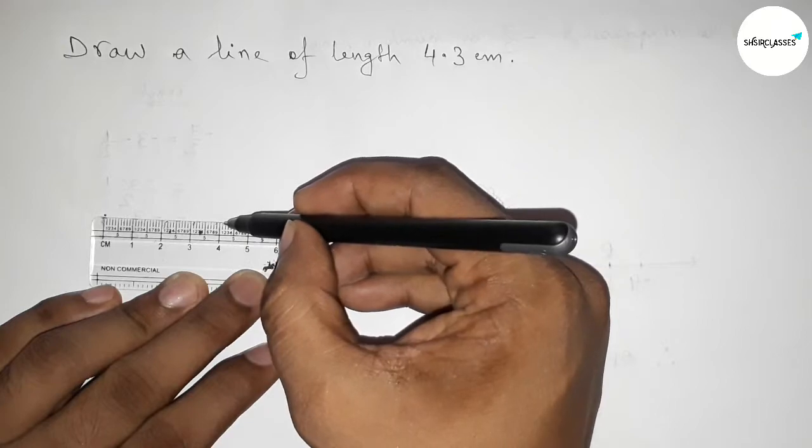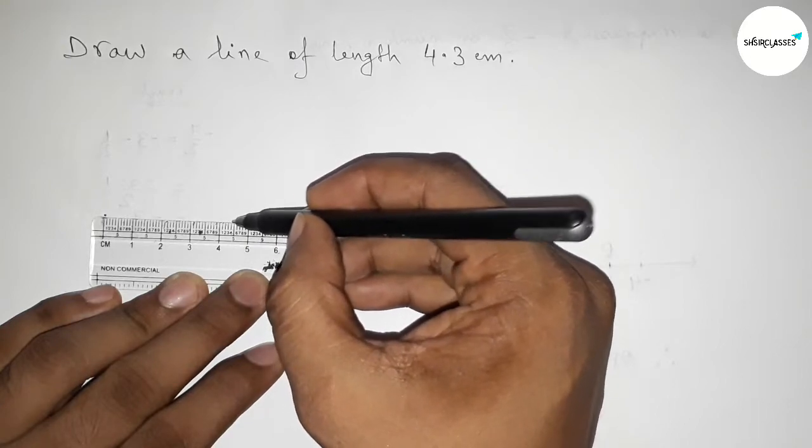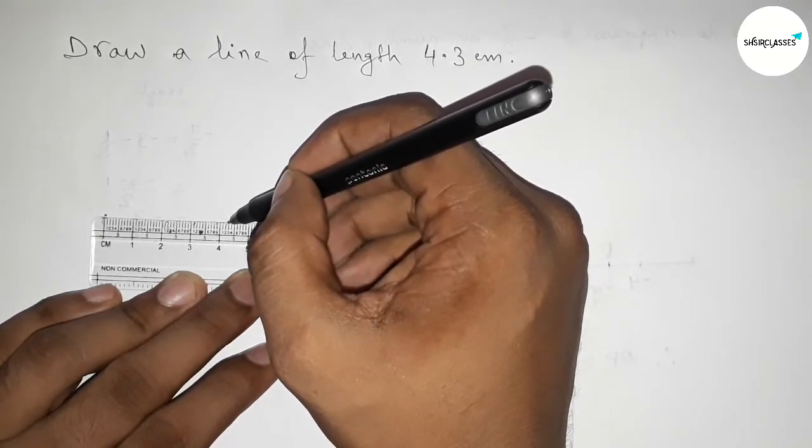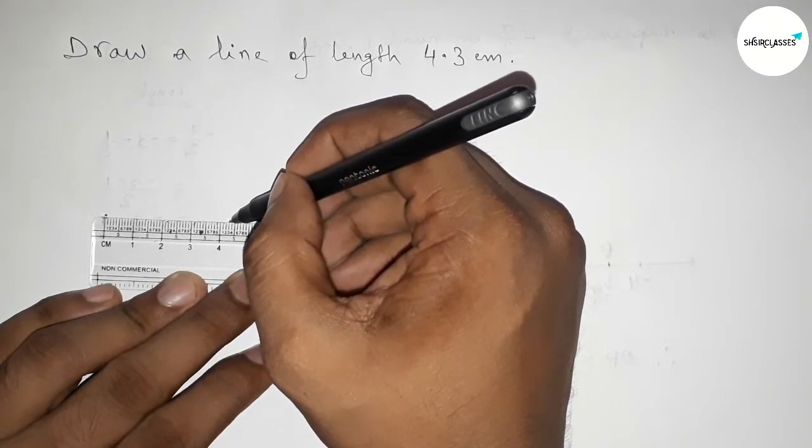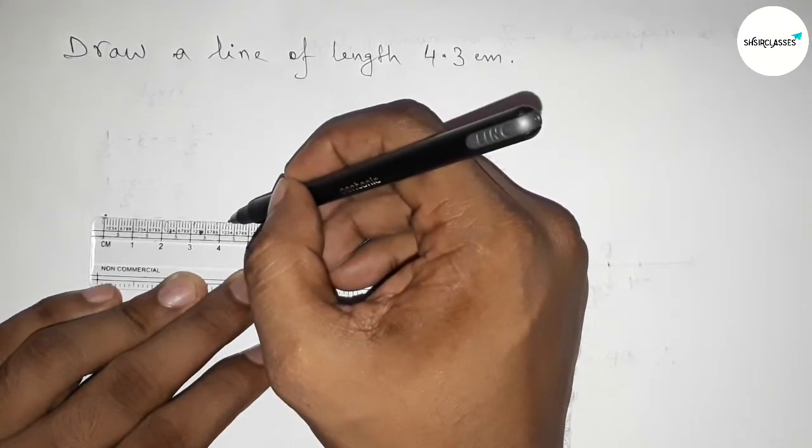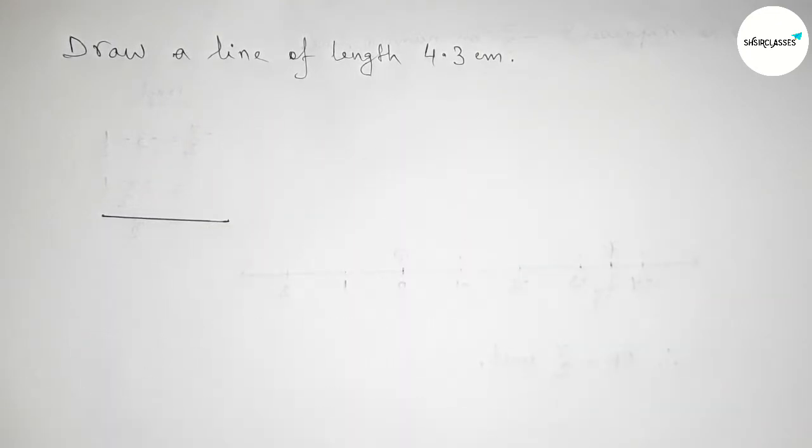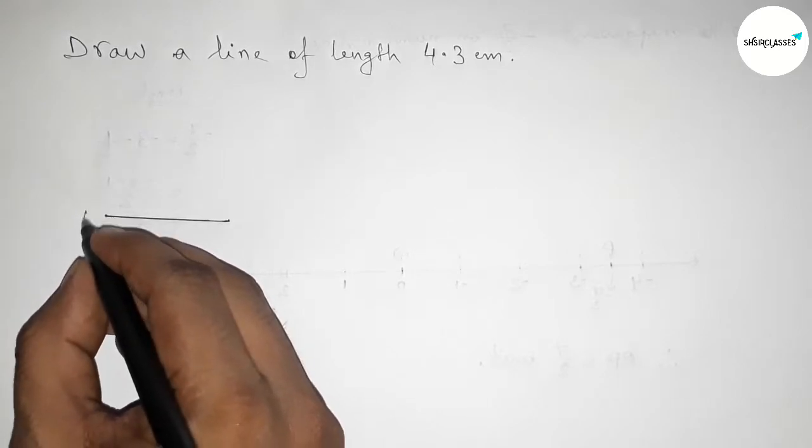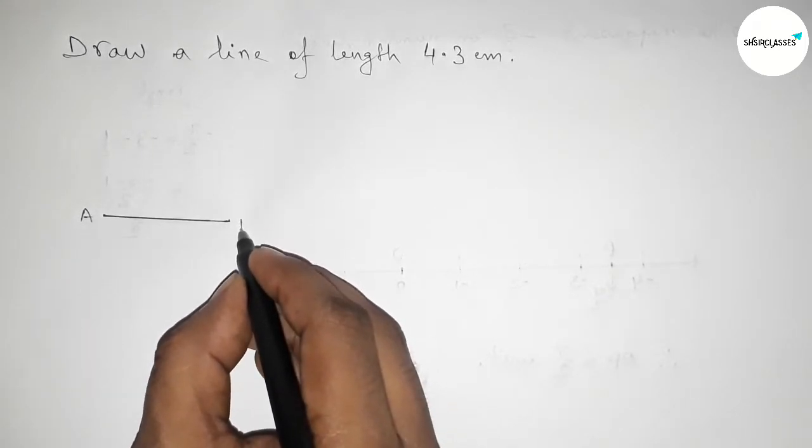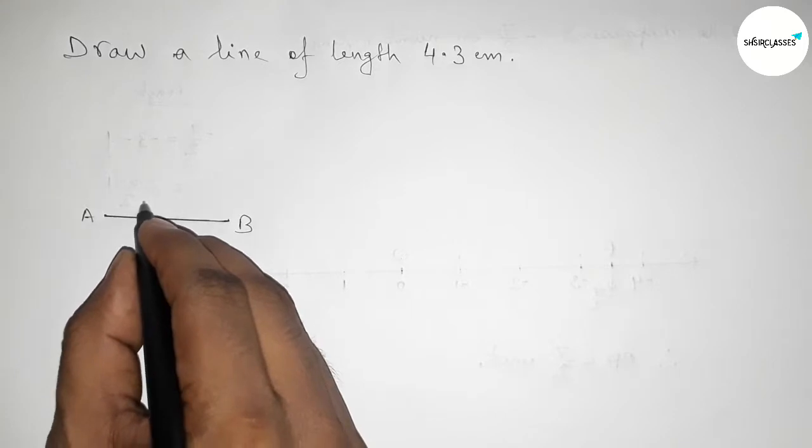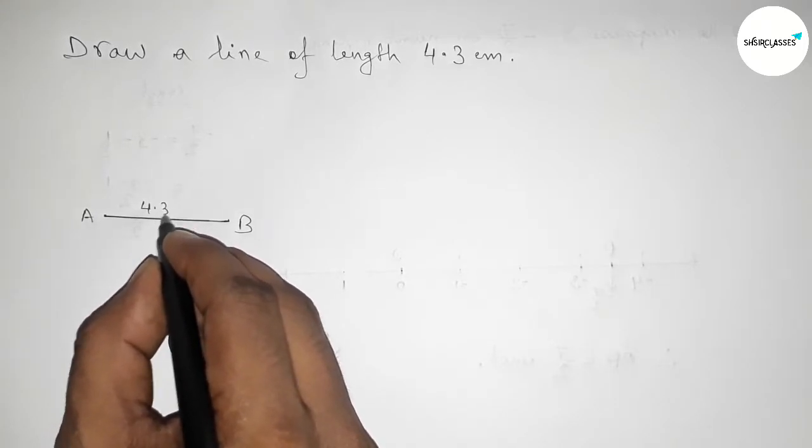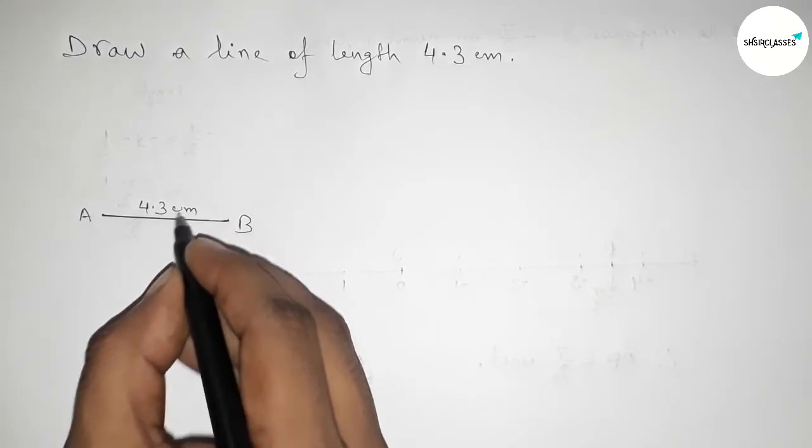This is 4.3 centimeters. Mark this 4.3 centimeters and join them. Now take point A here and point B here. So AB is a line of length 4.3 centimeters.